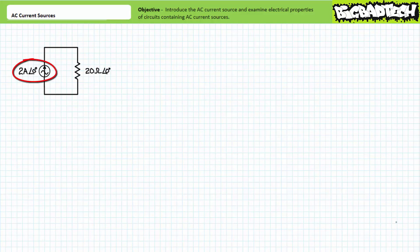An AC current source is a supply element that will push current of a given preset value through a circuit despite changes in impedance. In theory, an AC current source could push two amps at an angle of zero through a 20 ohm impedance as easily as it could a 20 mega ohm impedance, but the real world says differently. Regardless of the applied load impedance, an AC current source pushes the required amount of sinusoidal current through it.